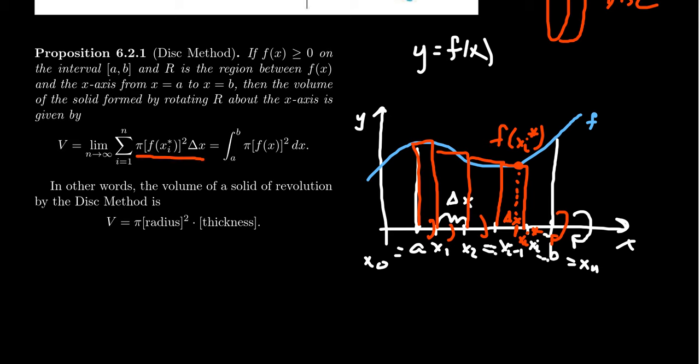Each of those disks would have a volume, which is pi f of xi star squared times delta x. This is a single volume, vi. In order to get the approximate volume of the solid of revolution, we would take the sum of all of these volumes, the volumes of each of these disks individually. Just like with the area problem, this only gives us an approximation of the volume.